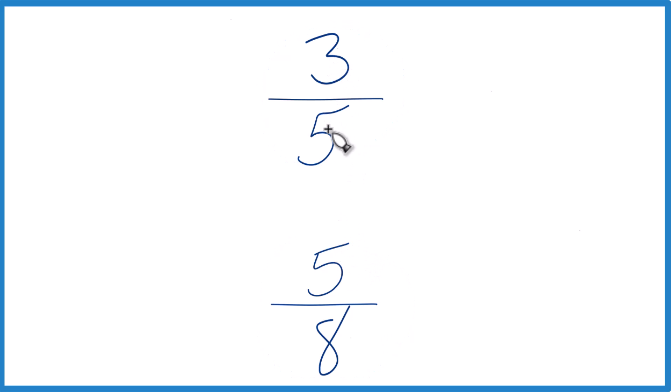First off, you could divide 3 by 5, get a decimal, then divide 5 by 8 and get a decimal, and just compare the decimals. And that would tell you whether 3 fifths is greater than, less than, or equal to 5 eighths.